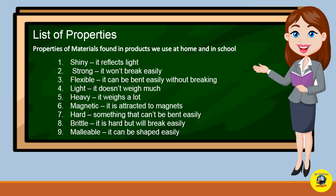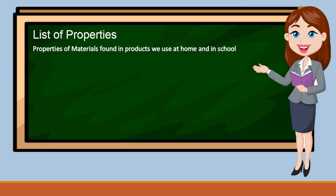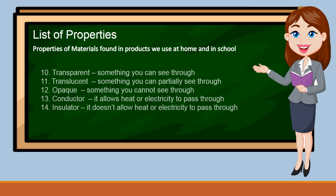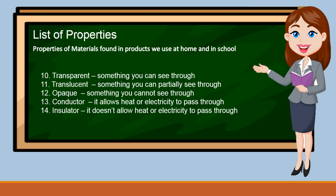We have: shiny, strong, flexible, light, heavy, magnetic, hard, brittle, malleable, transparent, translucent, opaque, conductor, and insulator.